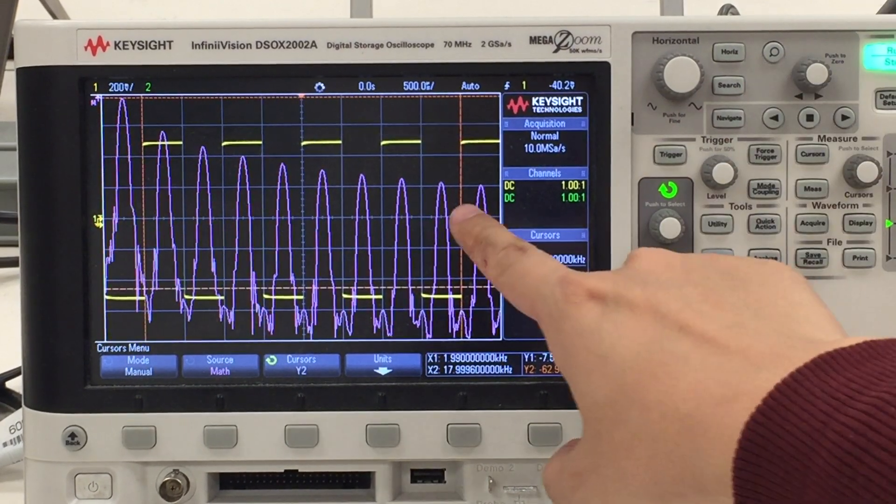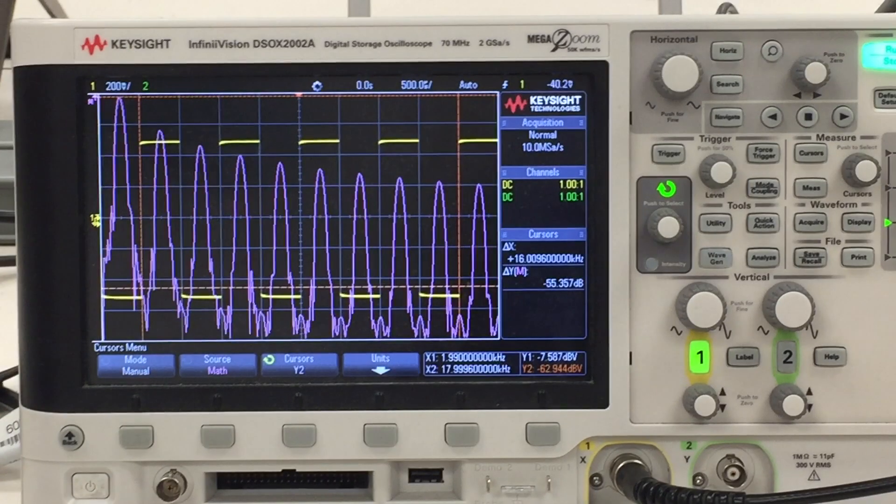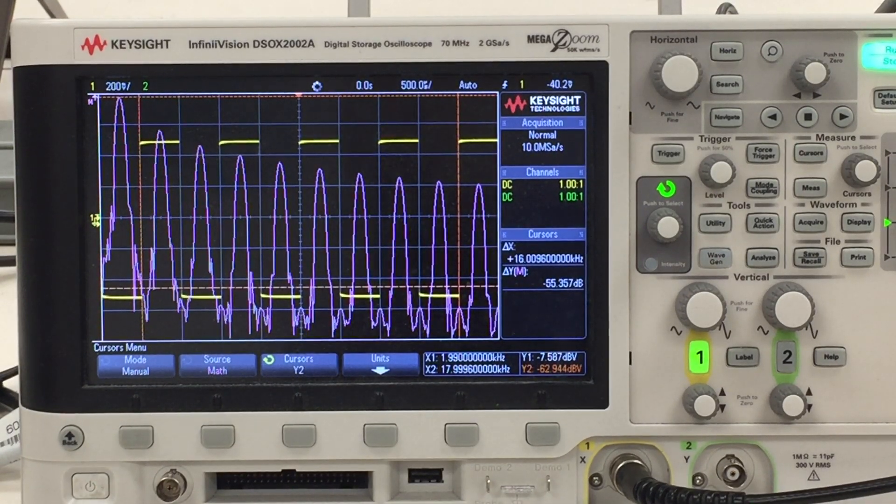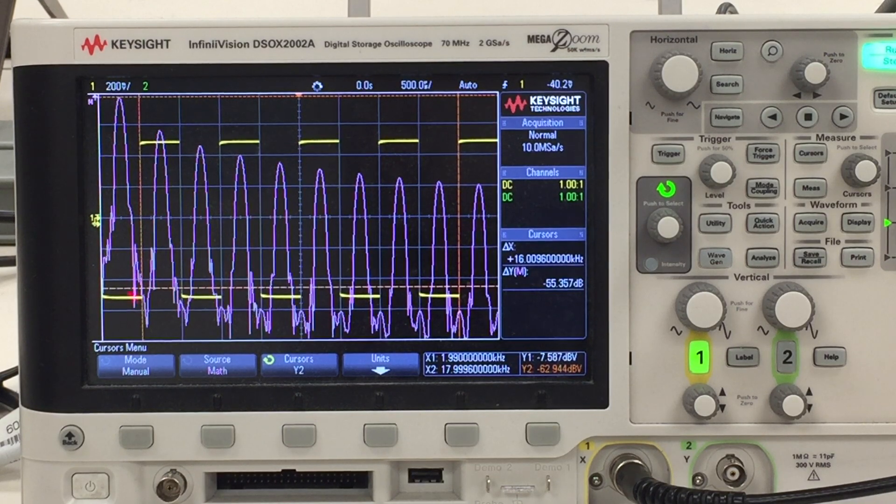So we can see that y2 right now is aligned with the crossing point of that x1 cursor and the purple curve here.